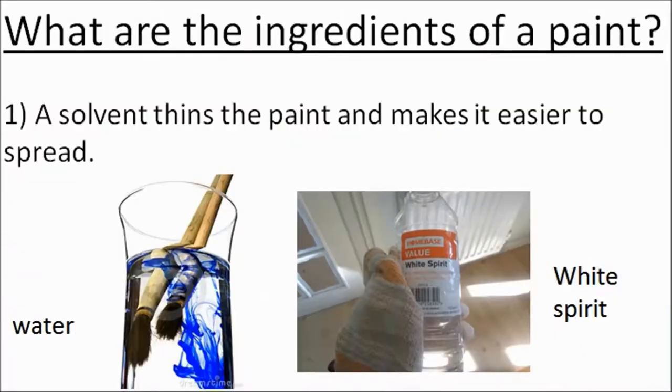So, what are the ingredients of a paint? Well, firstly, there's a solvent. Solvents dissolve stuff, but you have to have the right one for the right job. So, for example, water will dissolve emulsion paint. But if you want to dissolve something like an oil-based paint, you're going to need white spirit or something a bit stronger. Paint companies add these solvents to thin the paint out and make it easier to spread.